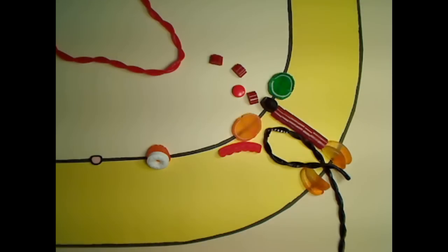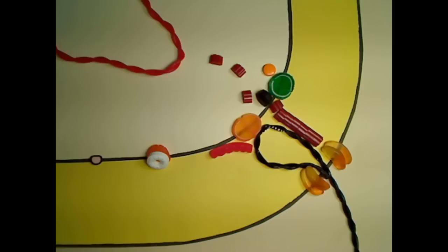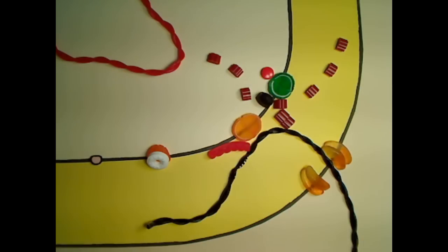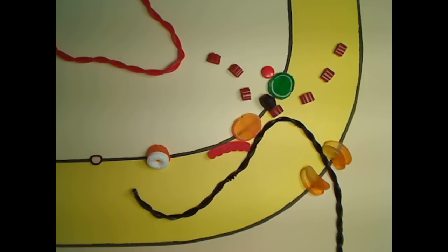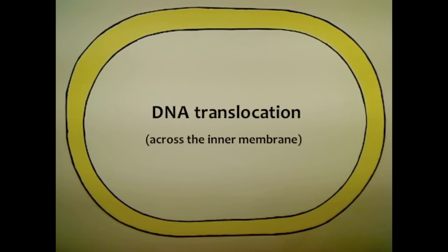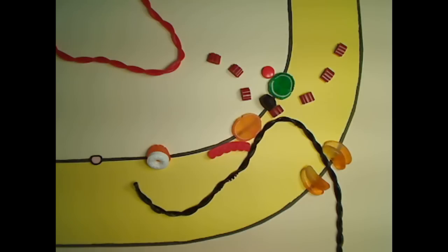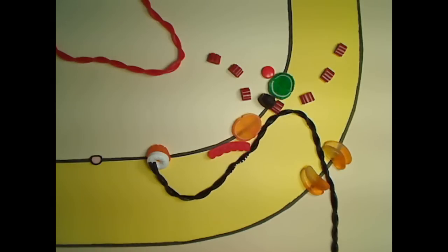Once a free end of the DNA is in the periplasm, the DNA can be translocated across the inner membrane into the cytoplasm. Only a single strand is translocated intact.